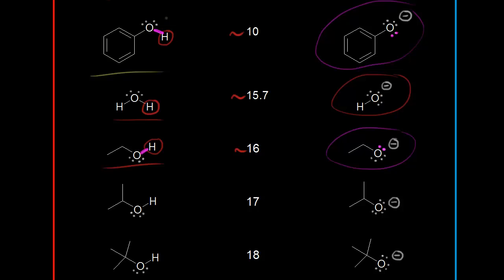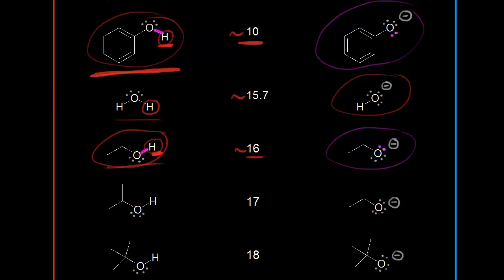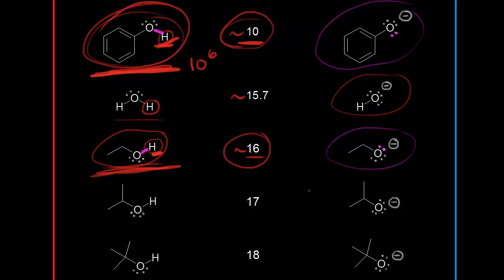So how much more acidic is phenol than ethanol? Remember, the lower the pKa value, the stronger the acid. Phenol has a pKa value of 10 for this proton, whereas ethanol has a pKa value of approximately 16. Remember the definition for pKa: it's the negative log of the Ka, and each pKa unit is an order of magnitude. The difference between these pKa values is six units, so this proton on phenol is 10 to the sixth times more acidic — meaning phenol is one million times more acidic than ethanol. That's really how to think about acid strength when looking at a pKa table, and it's so much easier to work with pKa values, which is why they're used so often in organic chemistry.